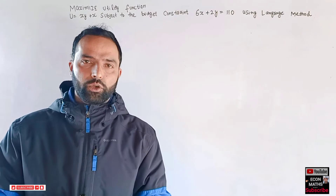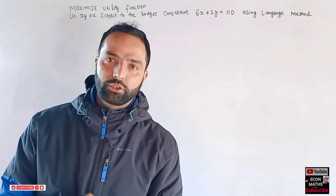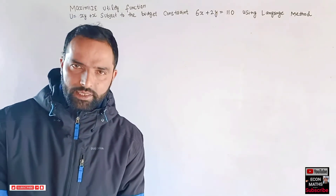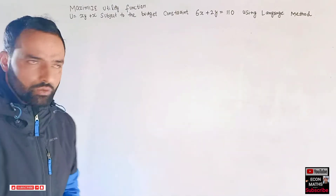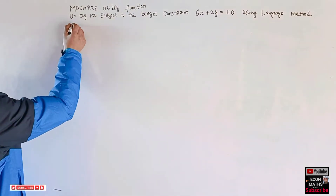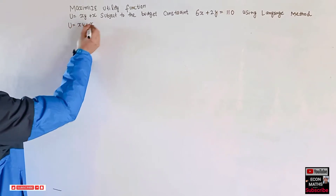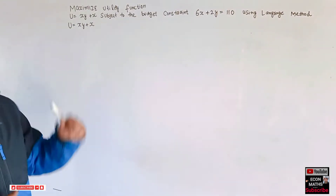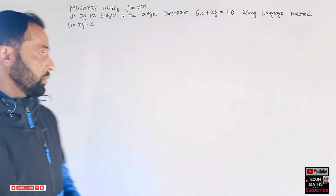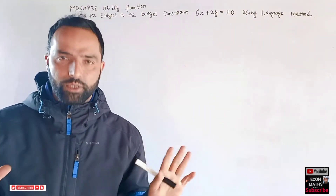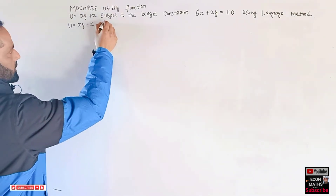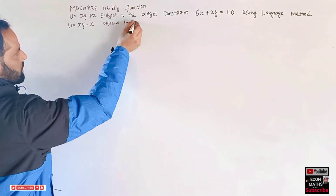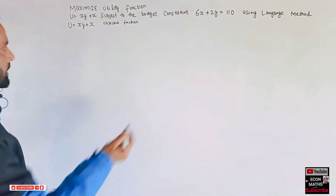We need to find the maximum utility the consumer will get when he optimizes his choices. For that we have to use the Lagrangian method. Our utility function u = xy + x is our objective function.